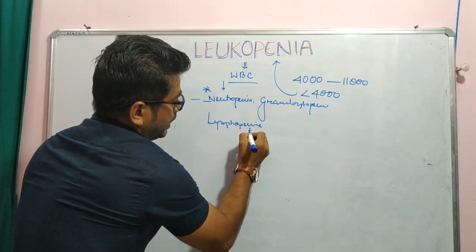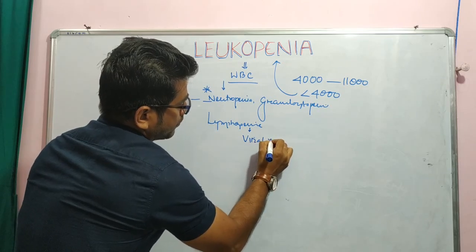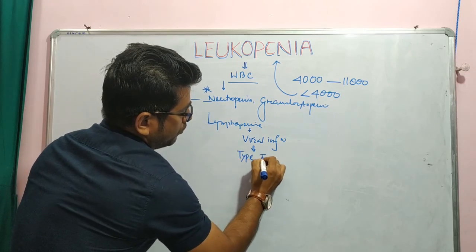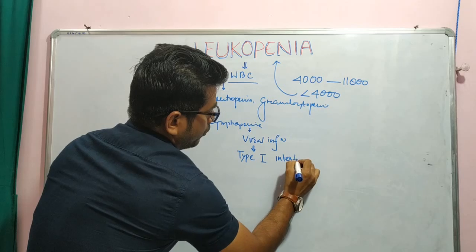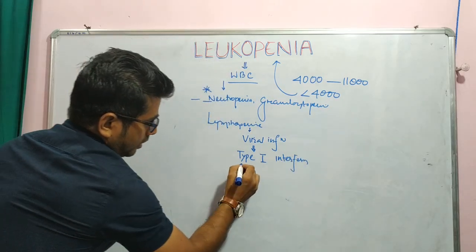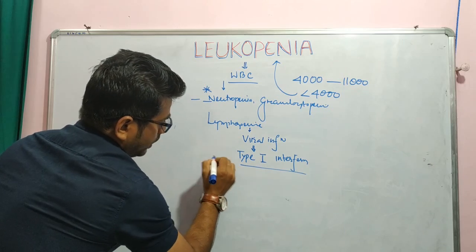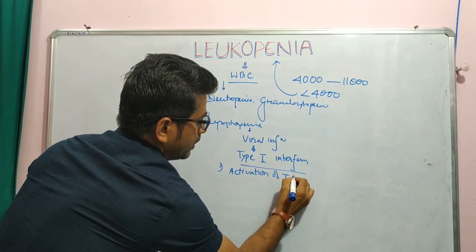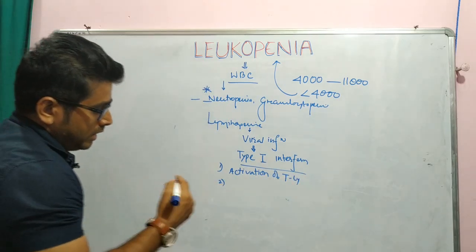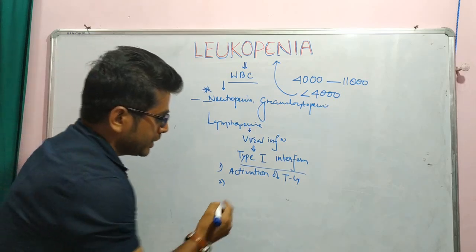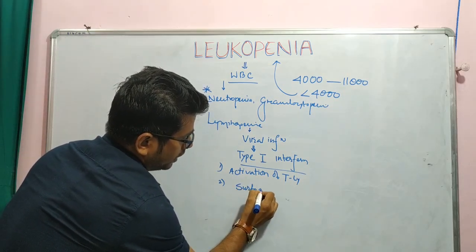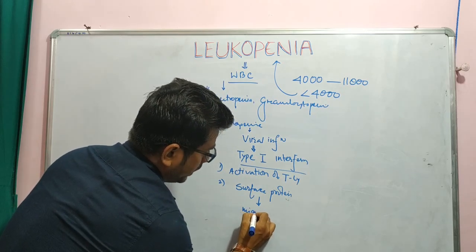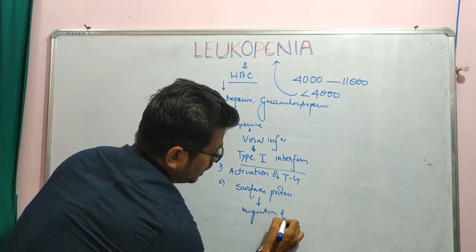What will happen is that any kind of viral infection will produce type one interferon. Type one interferon will cause: number one, activation of the T lymphocyte; and number two, it will alter the expression of surface proteins, thereby changing the migration of the T lymphocyte.